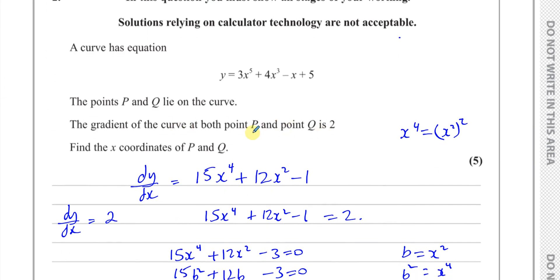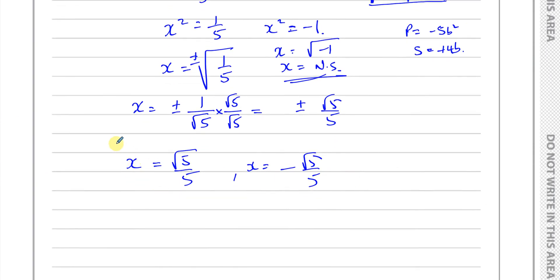They didn't tell us which one is which, which is a positive or negative one. So we can just leave our answers like this. These are the two answers, the x coordinates of P and Q.